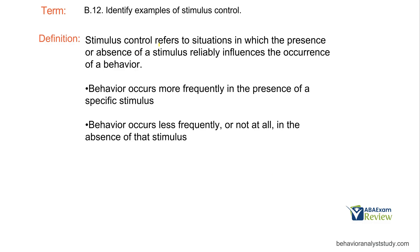Stimulus control refers to situations in which the presence or absence of a stimulus reliably influences the occurrence of a behavior. If there's an antecedent stimulus present and it evokes a response reliably, we can say there's probably stimulus control. If there's an antecedent stimulus and no response, then this stimulus probably doesn't have stimulus control. So we're just looking at when there are antecedent stimuli in the environment, what is happening as a result for our learner?